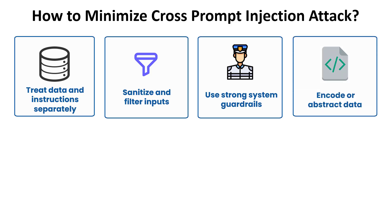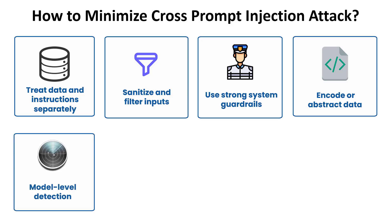Fourth, encode or abstract data: convert user content into structured formats like JSON or metadata, and avoid passing raw text directly to the LLM to reduce injection risk. Fifth, model-level detection: apply an instruction detection classifier on incoming documents, and flag suspicious or unusual commands before processing them in the system.